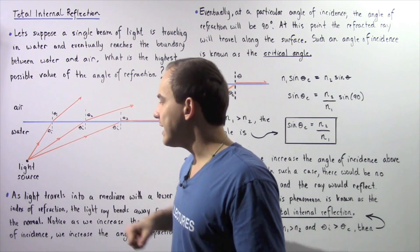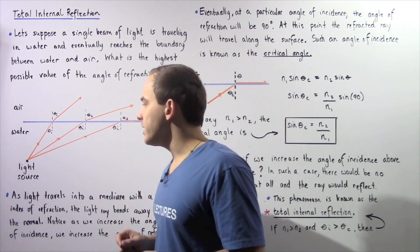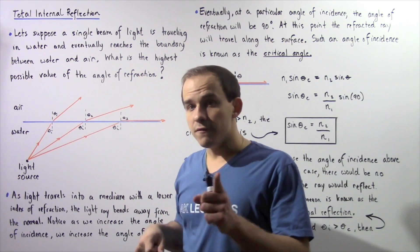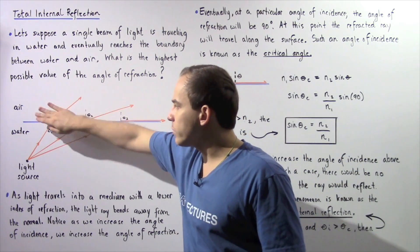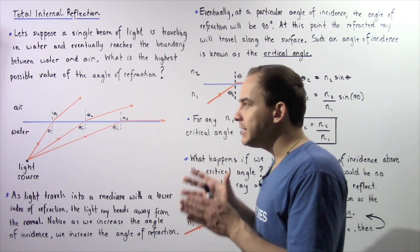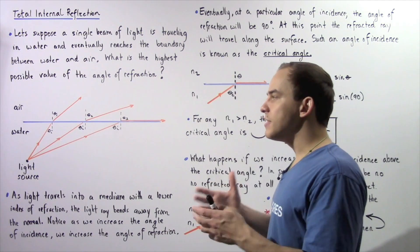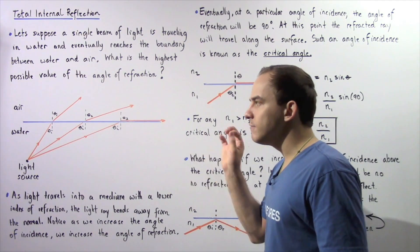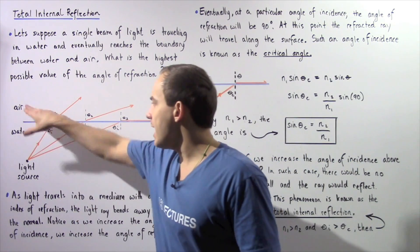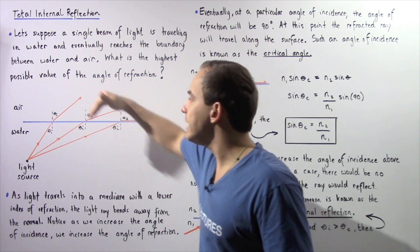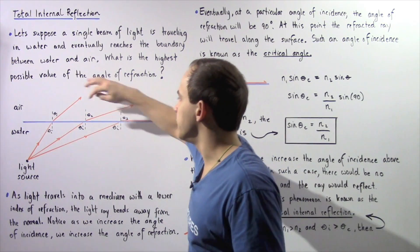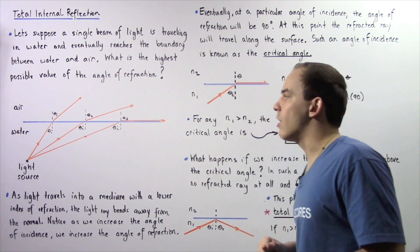Let's suppose we have a certain light source — a flashlight — that creates a single ray of light traveling along a particular pathway. Eventually, this ray of light will reach the boundary between water and air. Because water and air have different indices of refraction, the ray of light will bend. Because water has a higher index of refraction than air, the ray of light will bend away from the normal line drawn perpendicularly with respect to the surface of the water.